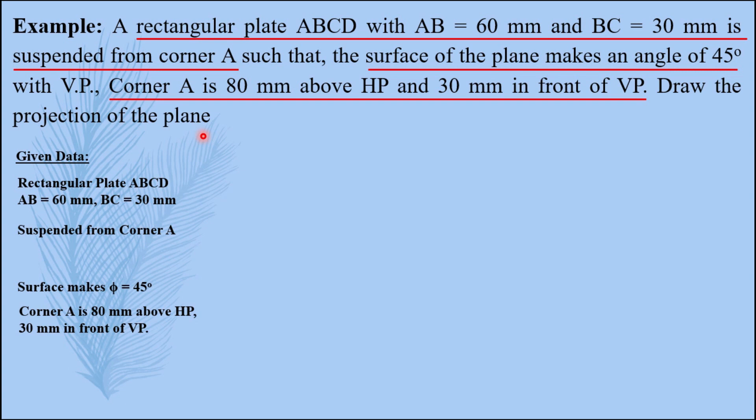Here, the first thing we always identify is surface angle. It is with VP, so the true shape will be visible in front view.